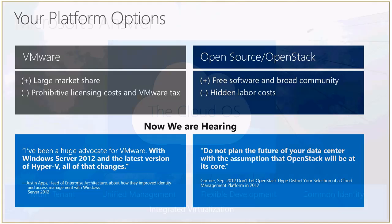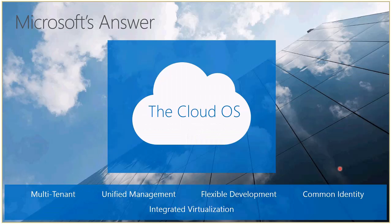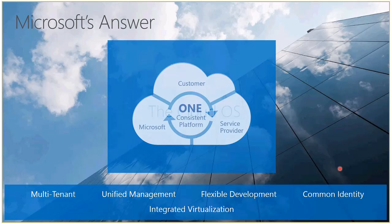That different approach is something we call the Cloud OS, which we announced a year and a half ago. The uniqueness of the Cloud OS is that we at Microsoft believe customers want to move to the cloud, but they want to move at their own pace. We also don't believe that customers want to move to a full public cloud only — we don't believe all applications will run in the big public cloud vendors like Amazon, Windows Azure, and Google services.